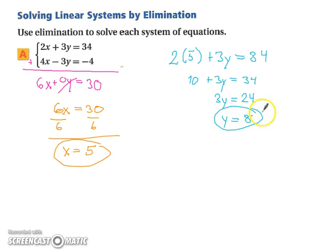So your end solution is 5, 8. Remember to always keep your end solution as a coordinate because if you recall back to when we were graphing, it was where the two lines intersected, and where they intersect is a point or a coordinate. So even if we're just solving algebraically, your solution is still a coordinate.